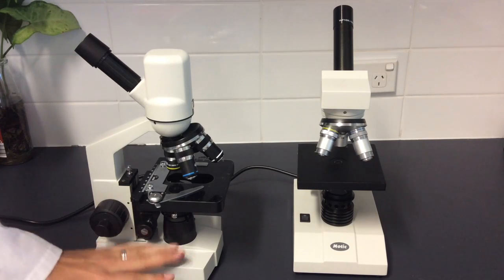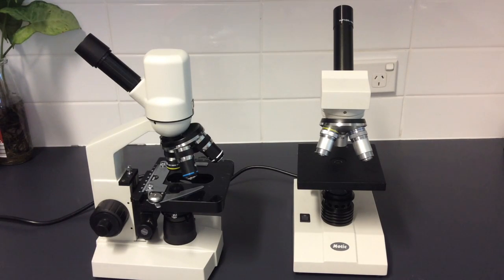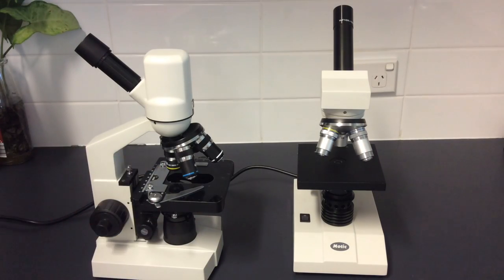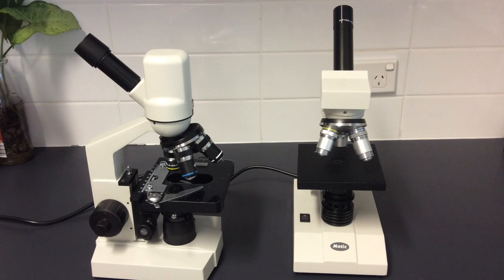So no points for guessing what this part of the microscope is. That is called the base. On the base you're going to find a light. Above the light you've got the stage. The stage is just the platform which the object can be viewed and placed.